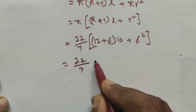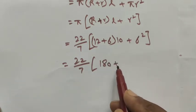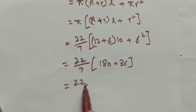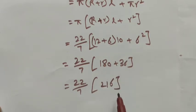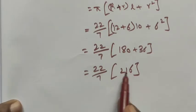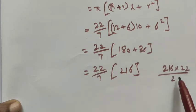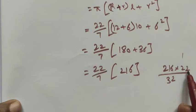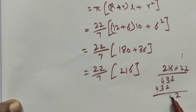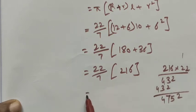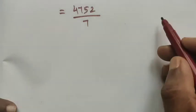Now calculating: 12 + 6 = 18, 18 × 10 = 180, and 6² = 36. So we have (22/7) × (180 + 36) = (22/7) × 216. Multiplying 22 × 216 gives 4752.